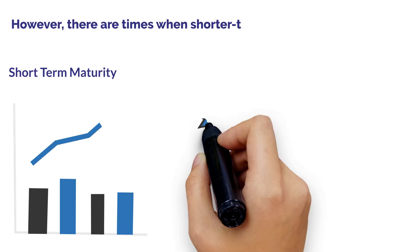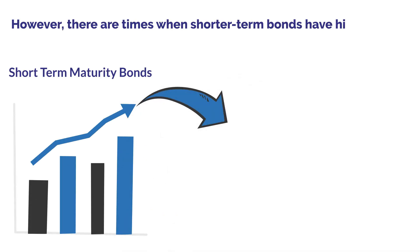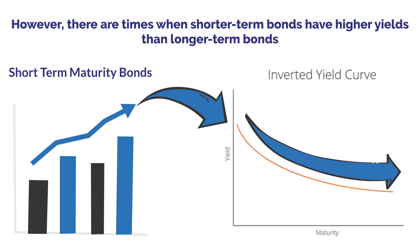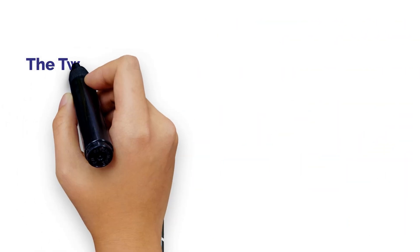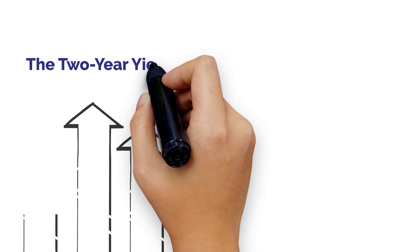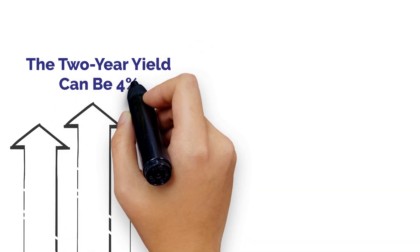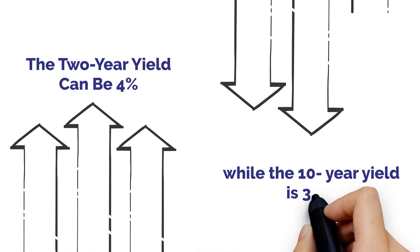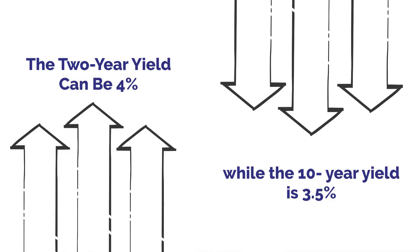However, there are times when shorter-term bonds have higher yields than longer-term bonds, and the yield curve becomes inverted. For example, the 2-year yield can be 4% while the 10-year yield is 3.5% — it's inverted.